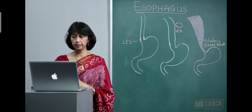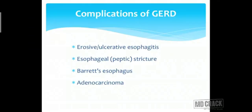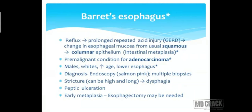As GERD goes untreated, the patient develops erosions, leading to erosive or ulcerative esophagitis. It can further narrow, causing esophageal or peptic strictures. The cells can change — this is Barrett's esophagus, which can predispose to adenocarcinoma. Prolonged GERD changes the esophageal mucosa from normal squamous to columnar epithelium — intestinal metaplasia — a pre-malignant condition for adenocarcinoma. The incidence is higher in males, in whites, increases with age, and is maximum at the lower esophageal site.